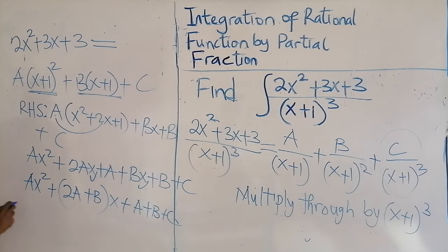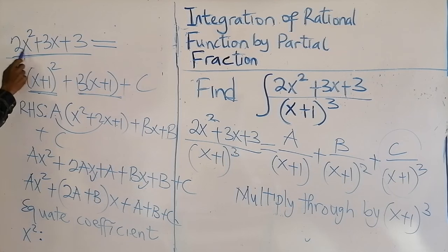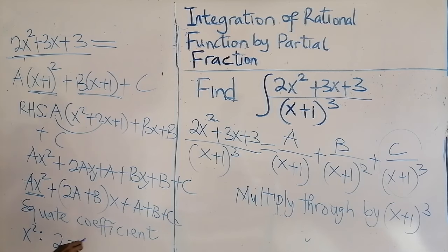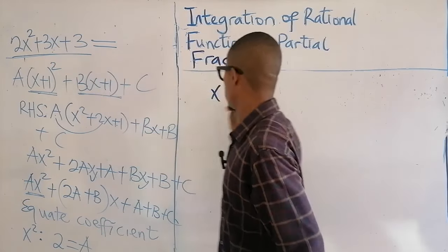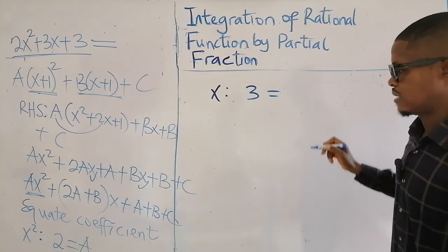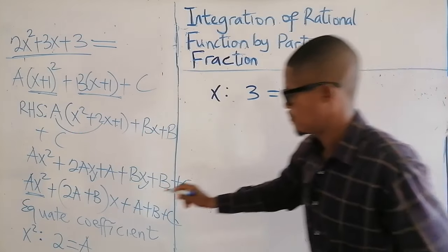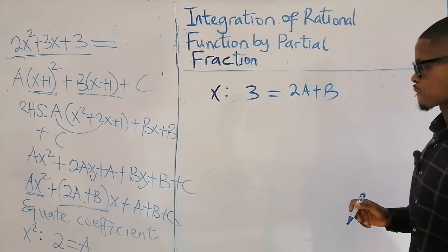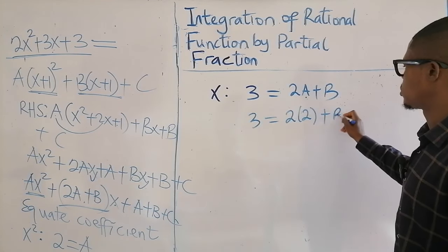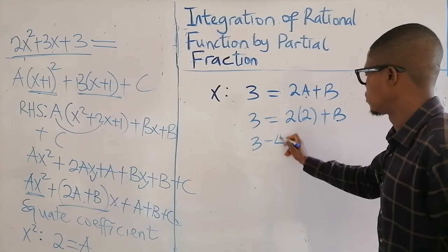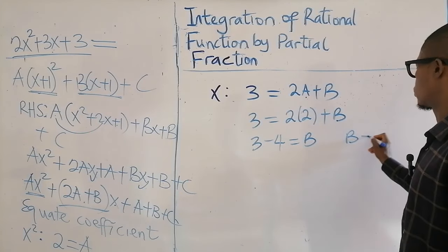The next thing to do is to equate coefficients. Starting with x²: the coefficient of x² on the left is 2 (from the numerator), and on the right it is A. So A equals 2. Now equating the coefficient of x: on the left it is 3, on the right it is 2A + B. So 3 equals 2 times 2 plus B, giving 3 minus 4 equals B, so B equals minus 1.